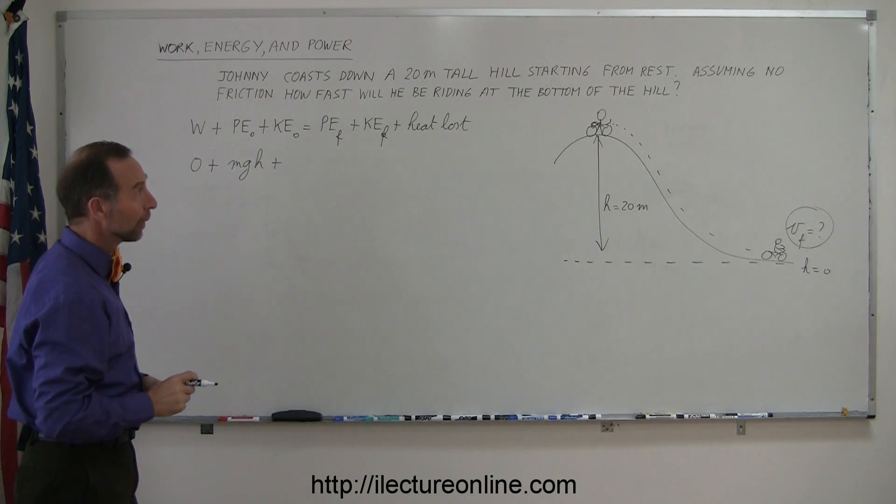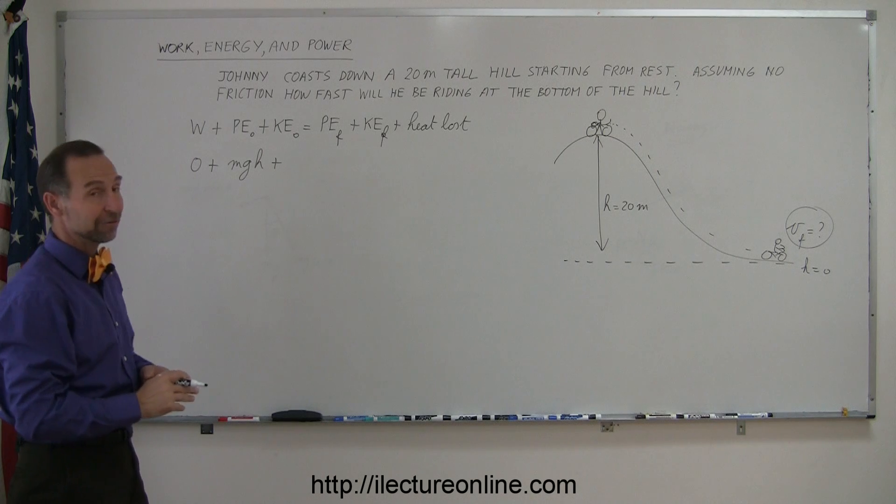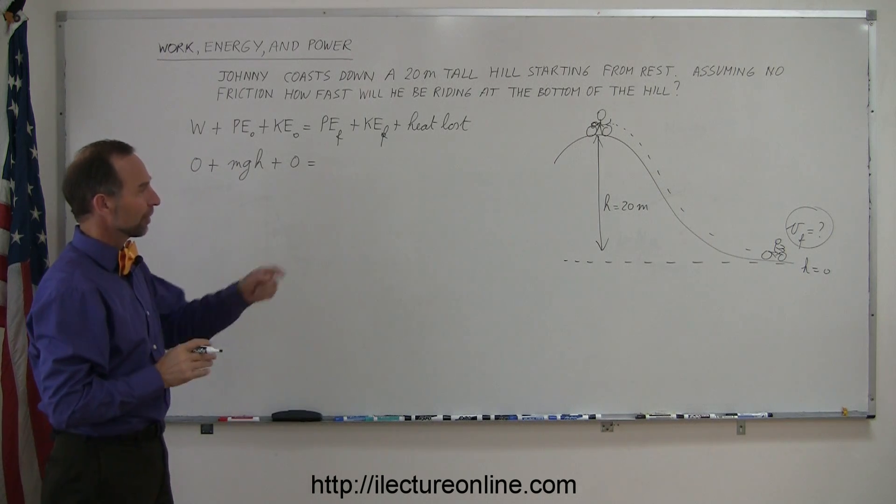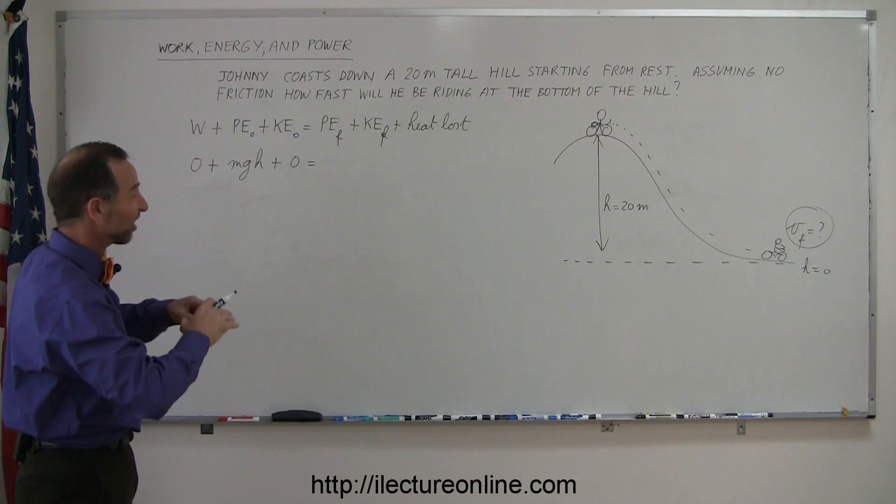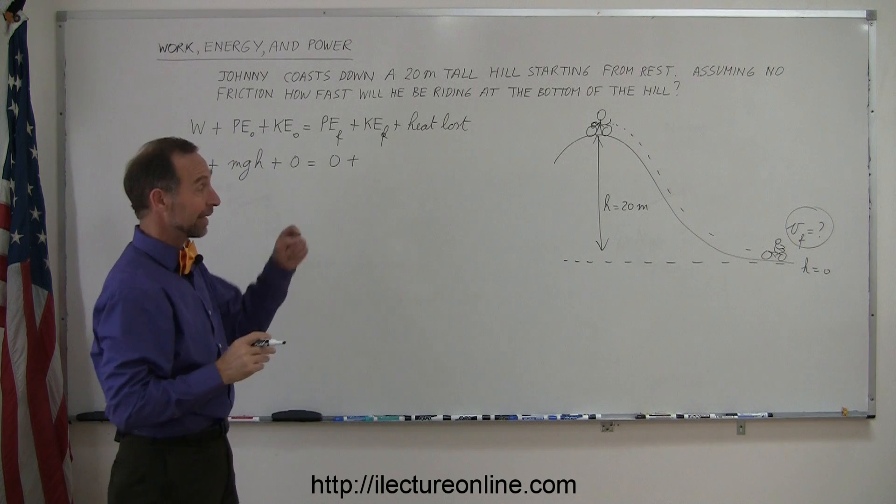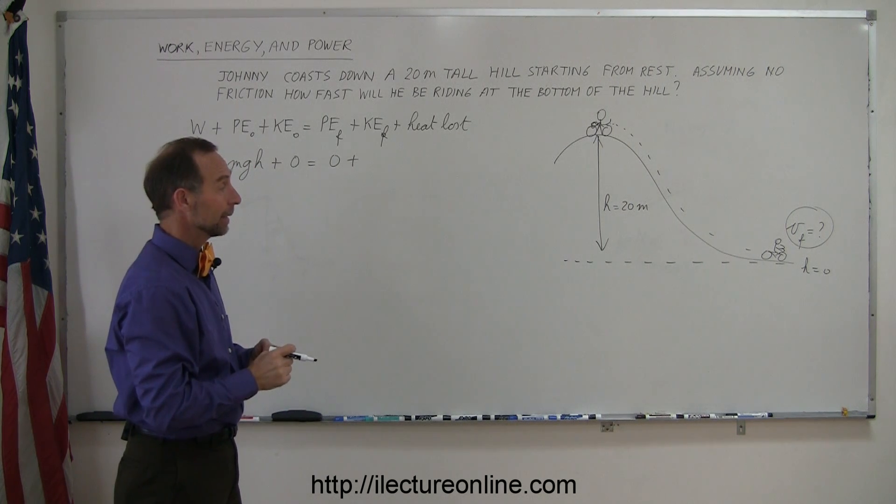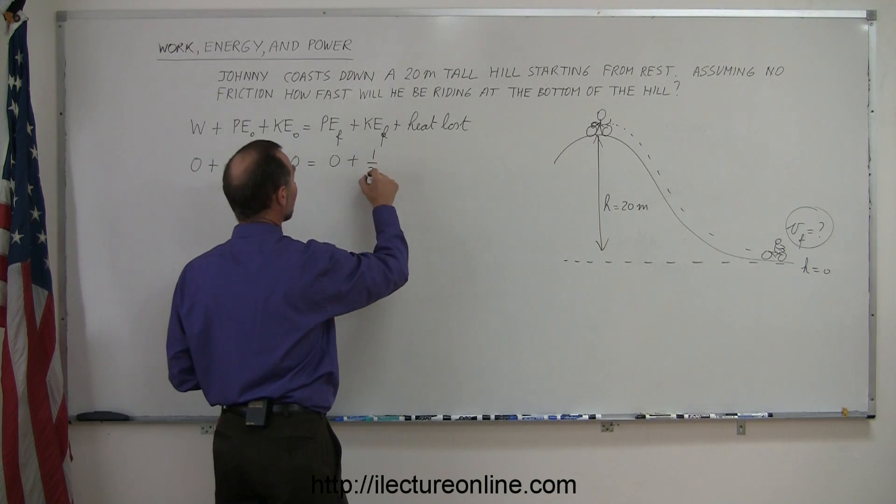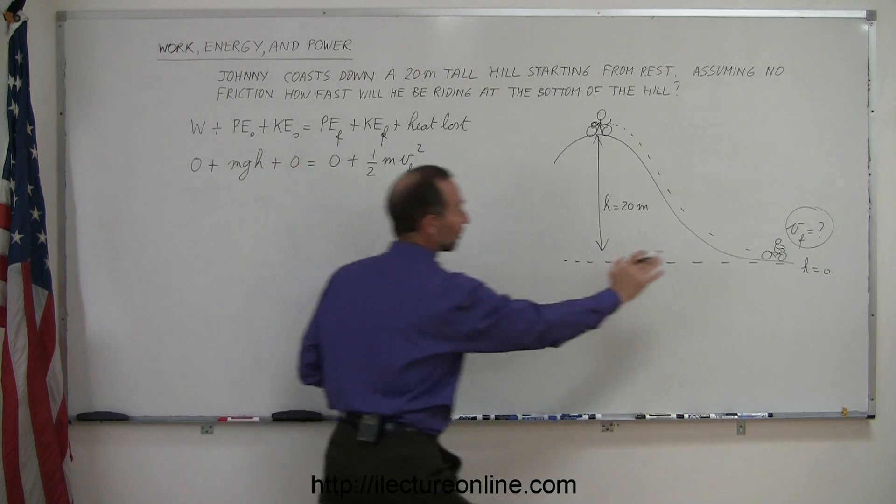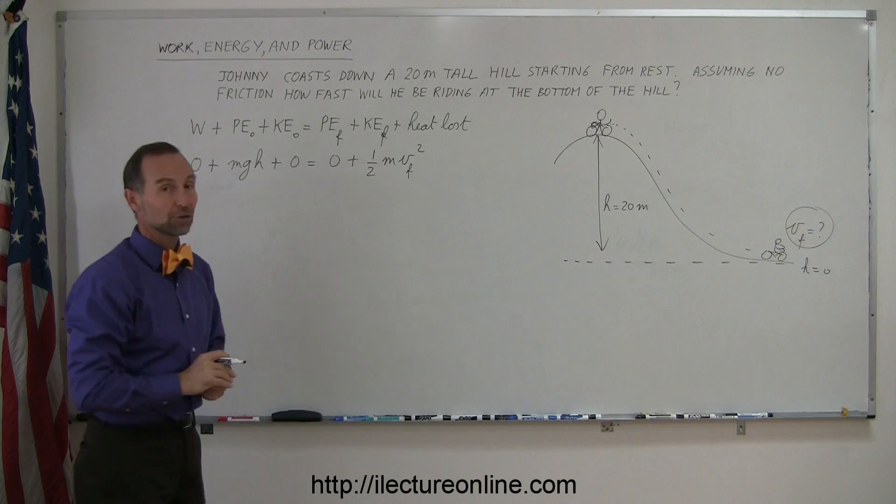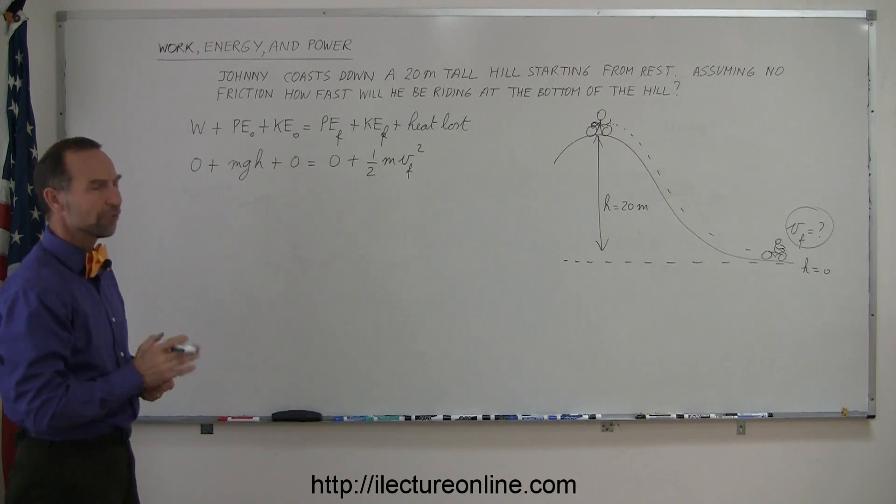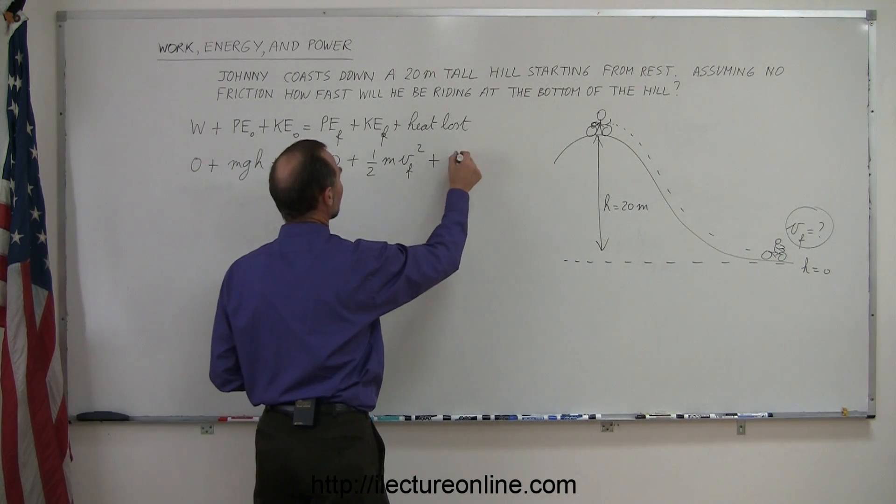How about kinetic energy? Well, it says that he started from rest. He was not moving. If Johnny wasn't moving, he had no kinetic energy at the beginning. How about afterwards, at the bottom of the hill? Did he have any potential energy? Since at the bottom of the hill, height is zero, no potential energy. How about kinetic energy? Well, we're assuming that when he gets to the bottom of the hill, he was moving. And the definition of kinetic energy is one-half the mass of the object times the velocity of the object squared. So here's that final velocity we're looking for. And then finally, heat lost. Since there was no friction, no wind resistance, we can say that there was zero heat lost.